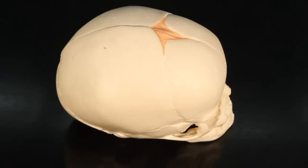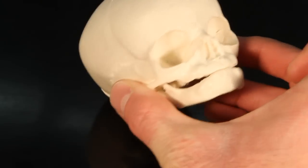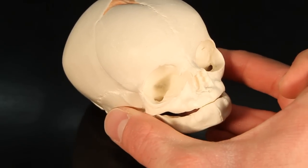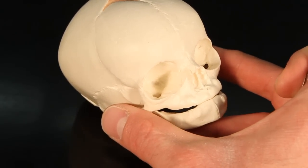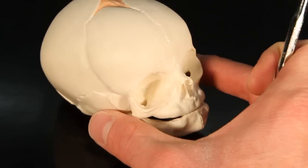On the fetal skull, we have a few unique structures that can only be seen here. First off, this is the anterior side. If we look at the anterior surface, you can see it looks very similar to what an adult skull looks like, but there are some notable differences.